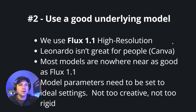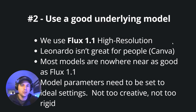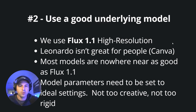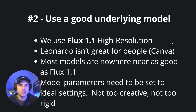Here's another huge key: you need a good underlying model. We use Flux 1.1 high resolution. Leonardo, which Canva's using, is really good for some things but it's not good for people — that's why those results came out so weird. None of the other background models are anywhere near as good for people as Flux 1.1. Also, the model parameters need to be tweaked and adjusted — not too creative and not too rigid. If it's too creative, the photos don't look like you. If it's too rigid, every photo looks exactly the same, like you just cut it out and changed the background. That balance is why some AI generators are better than others.